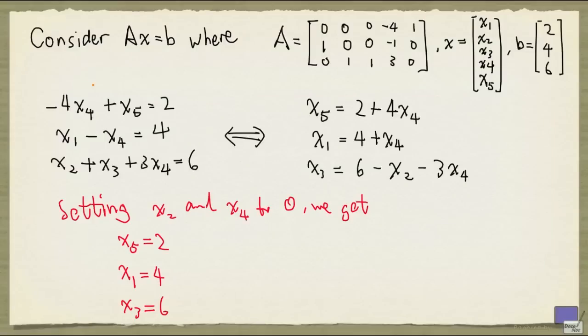Well, if you look at the system more carefully, you will notice that in each equation, there is a variable that appears in no other equation, and its coefficient is 1. So in the first equation, I have x5. It doesn't appear anywhere else, and its coefficient is 1.